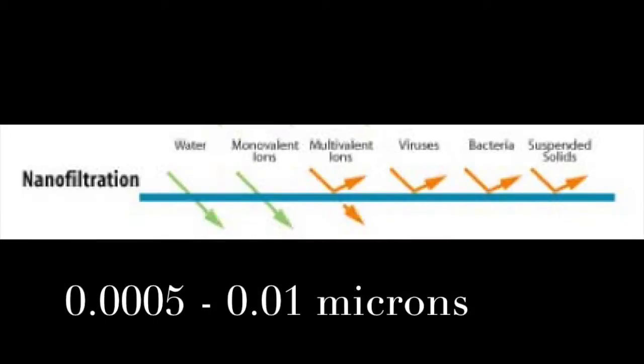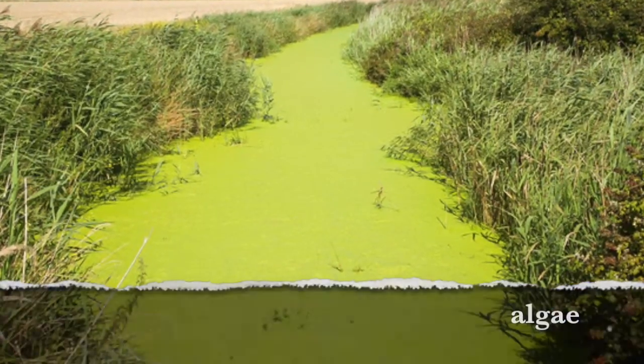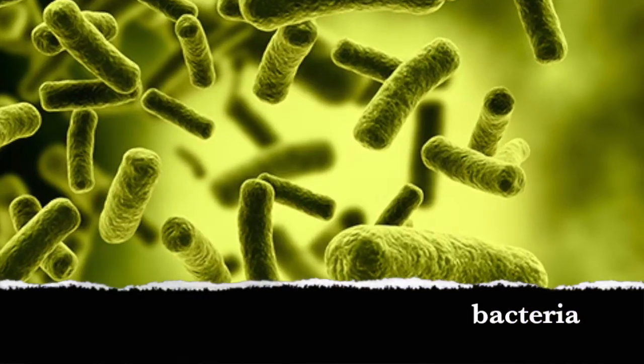Nanofiltration's pore size ranges from 0.0005 to 0.01 microns across. This removes all substances the same as microfiltration and ultrafiltration removed, which was algae, Giardia, Cryptosporidium, clay, humic acid and viruses, as well as dissolved metals and salts.